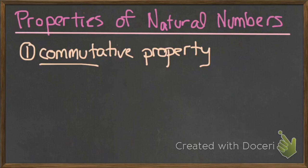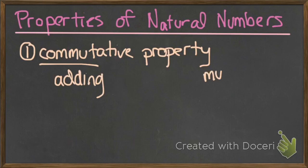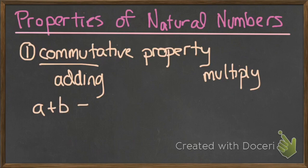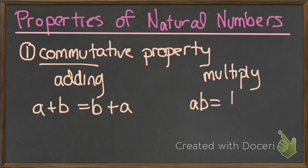We're going to split our properties into two things: adding and multiplication. In terms of the commutative law, we're going to use a, b, and c as our natural numbers. If a plus b is the same thing as b plus a — it doesn't matter the order in which we rearrange these letters or numbers. And if we were to do multiplying, a times b is the same thing as b times a.